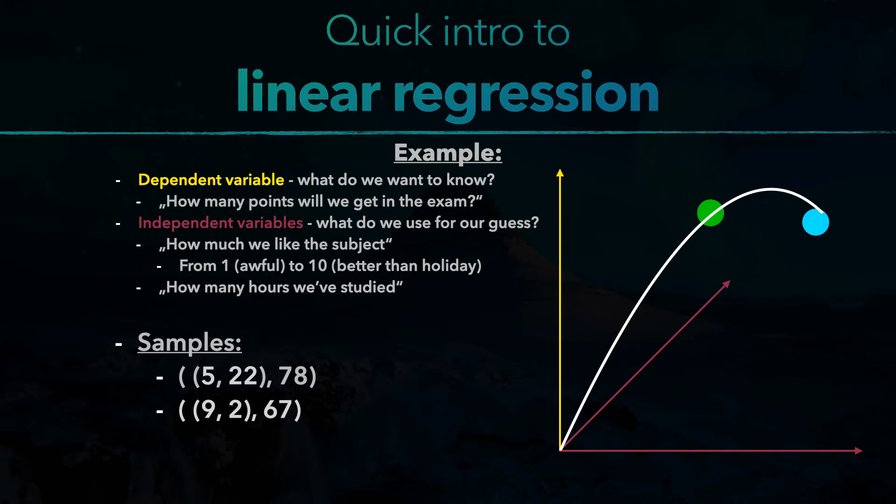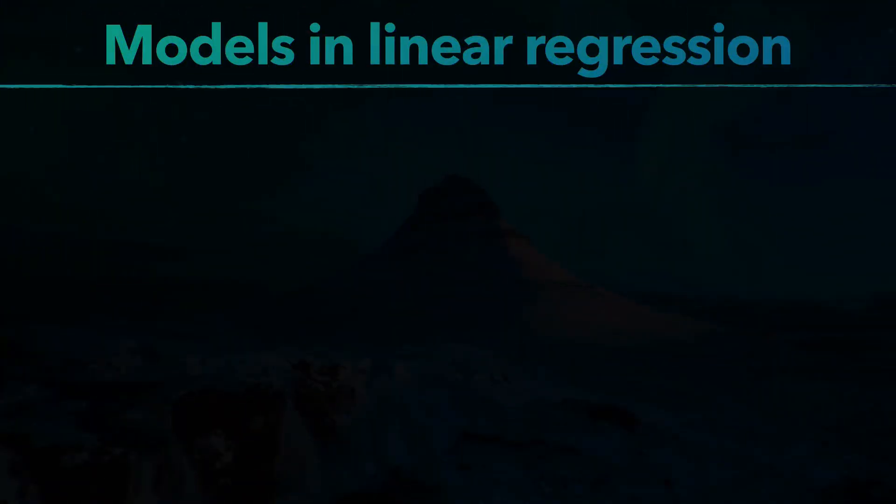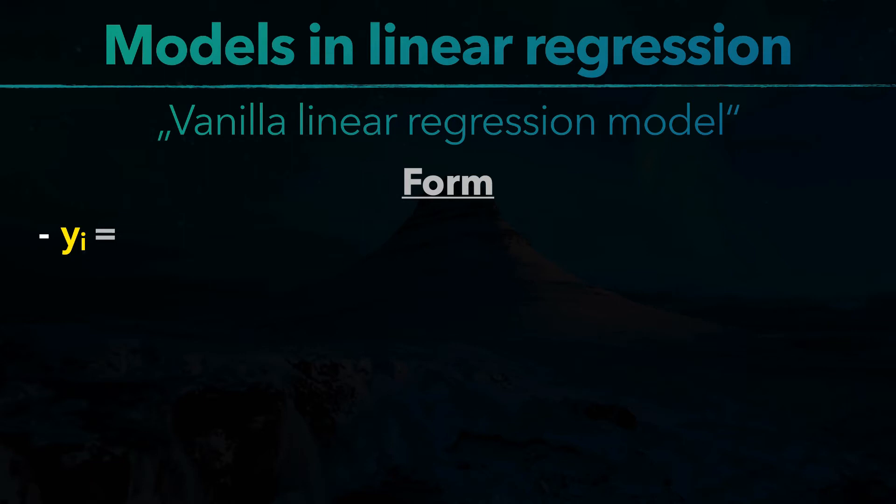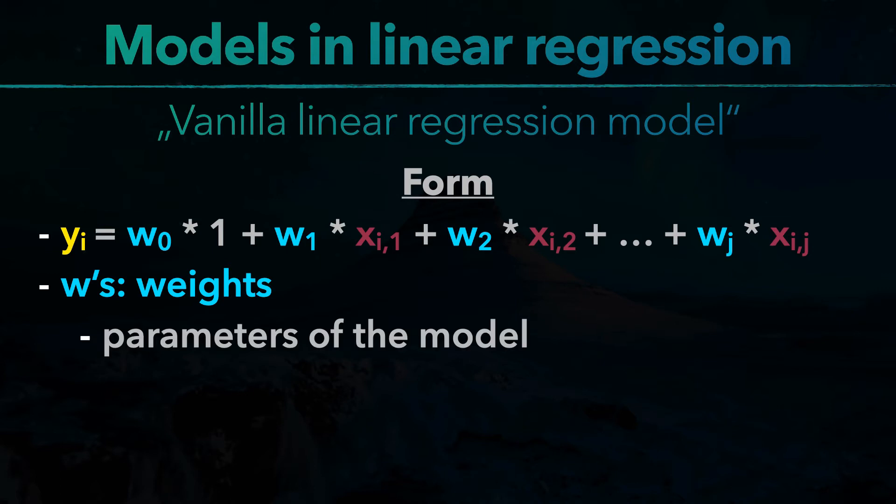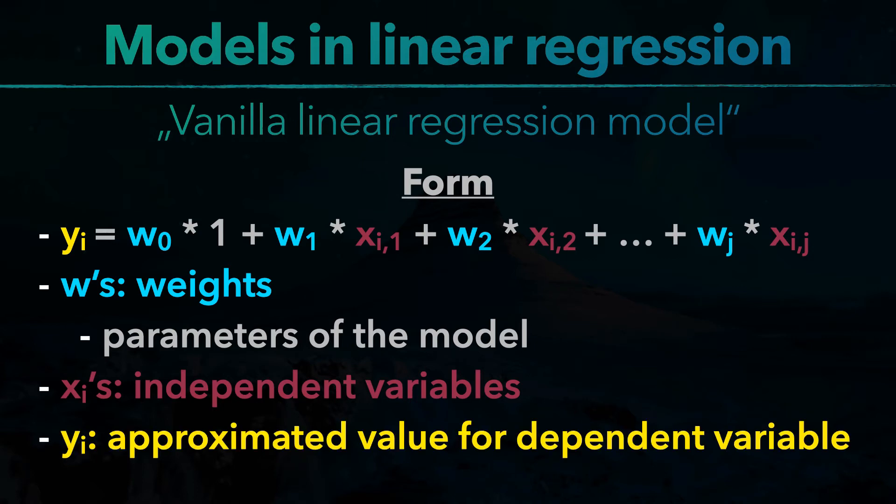Now let's have a look at what models look like in linear regression. A basic form is the so-called vanilla linear regression model, which has the following form: yi equals w0 times 1 plus w1 times xi1 plus w2 times xi2 and so on, until wj times xij. Where the w's are the weights, which are the parameters of the model,